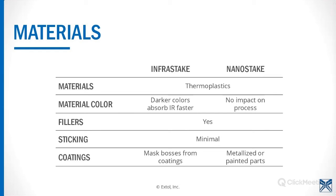Both Infrastake and Nanostake work with any thermoplastic. However, with Infrastake, because it is infrared in nature, darker colors absorb infrared energy more efficiently, which makes the cycle time faster — dark equals fast, light equals slow. Nanostake is conductive, so color does not have any effect on the process. Both can be used with fillers such as glass or talc, which may cause a little more wear on the tooling over the life of a product, but both will work just fine. Both products are very minimal in sticking — Infrastake due to the non-heated punch, and Nanostake due to the release temperature.